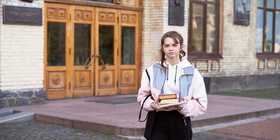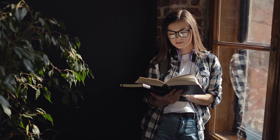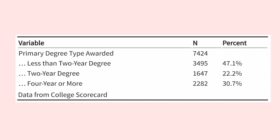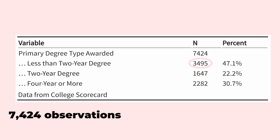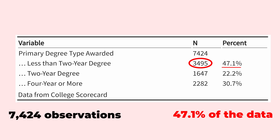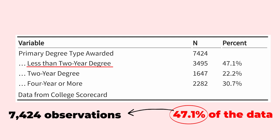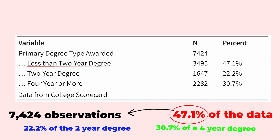Here's an example: I've got some data on colleges, and the first variable I'm going to look at is the kind of degrees those colleges award — are they two-year colleges, less-than-two-year certificates, or four-year or more degrees? In this data set of 7,424 observations, 3,495 award less than two-year degrees, which is 47.1%. Then 22.2% offer two-year degrees and 30.7% offer four-year degrees. That is the sample distribution of this variable — and when you have a categorical variable, that is all you need to do to fully describe it.